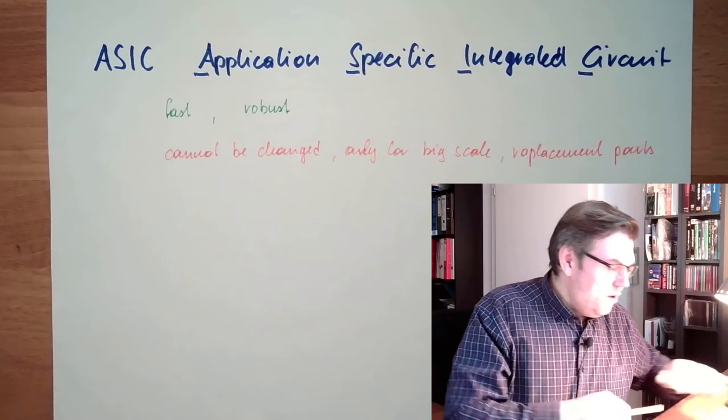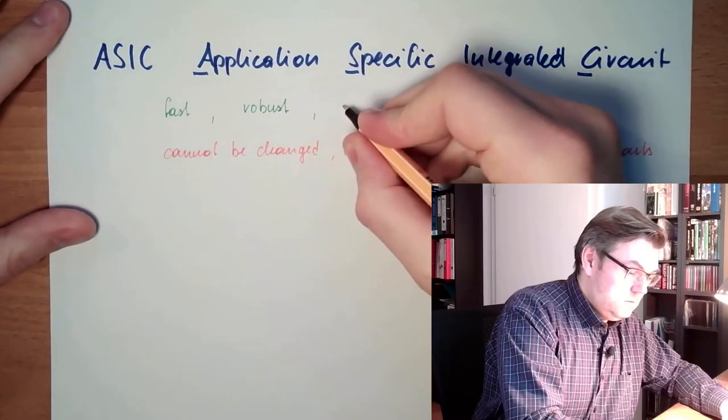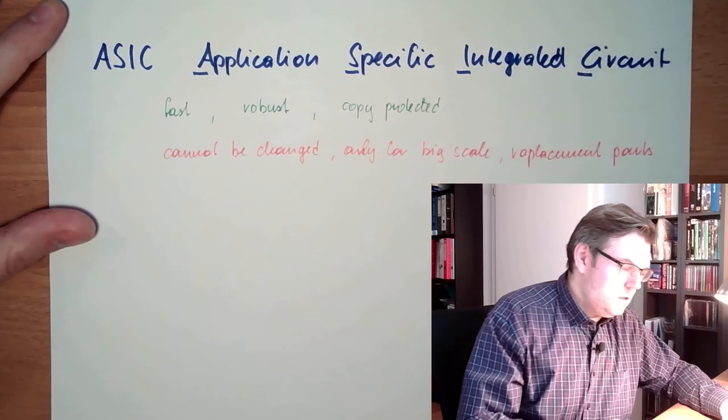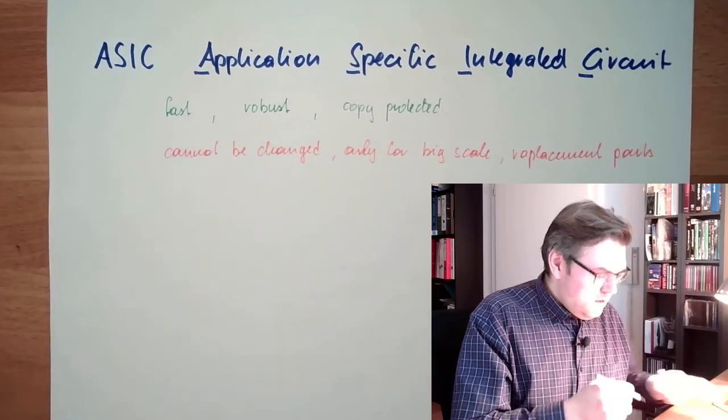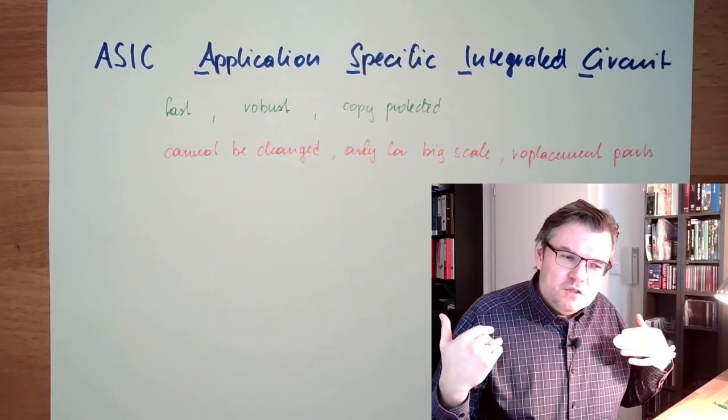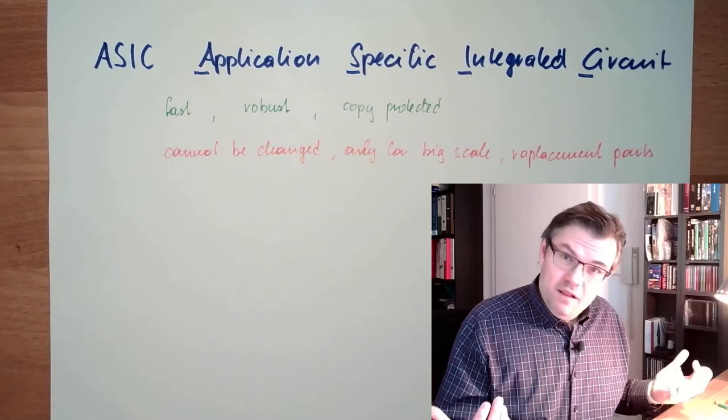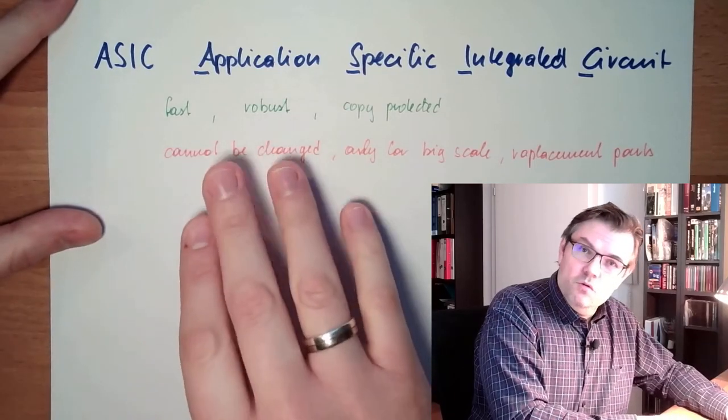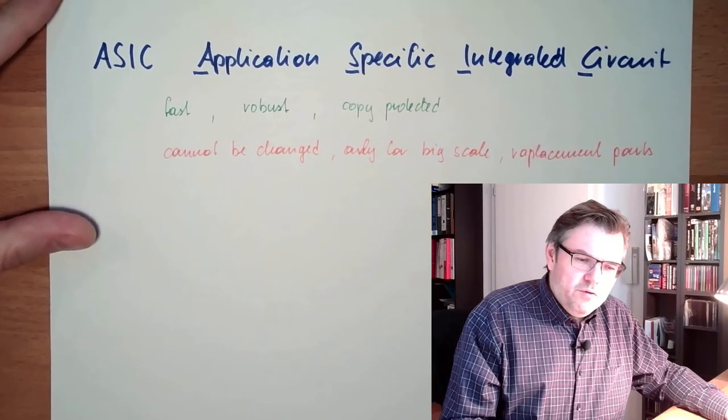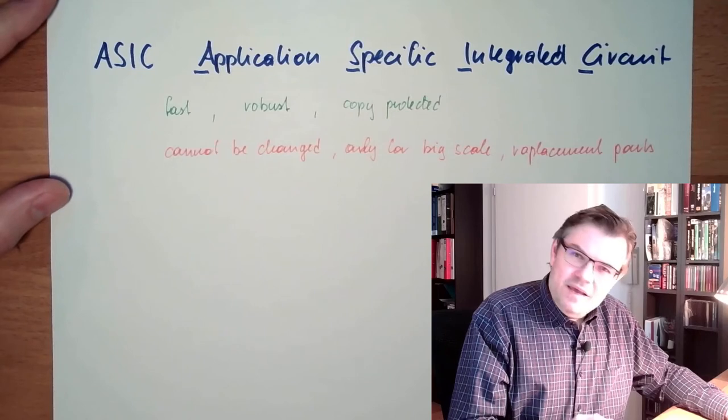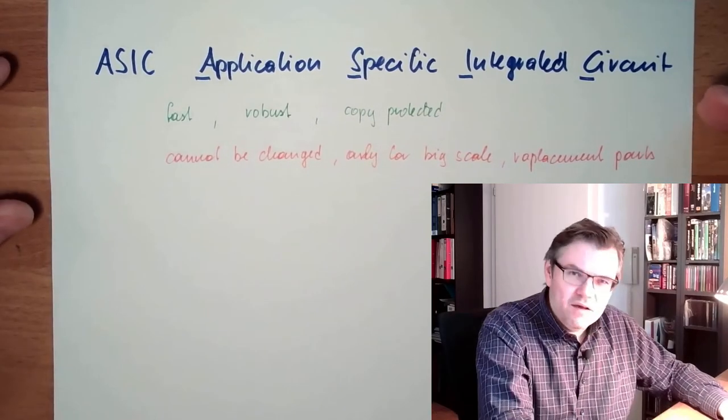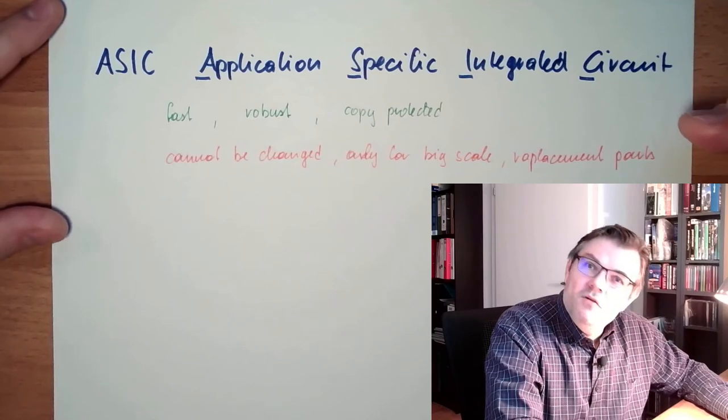ASICs, like I said, have big benefits also. They're pretty much copy protected. This can also be a benefit - that they cannot be changed. Because this is the silicon, it works that way. Even if the most stupid, assumable user is trying to reprogram this, he or she will fail. This might be good also. And copy protected? Well, I cannot read out any program. I really have to analyze the ASIC, which is also not that easy because of the small structures. So this is one possibility of integrating logic in electronic way.